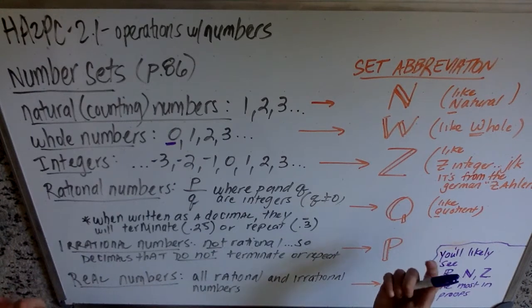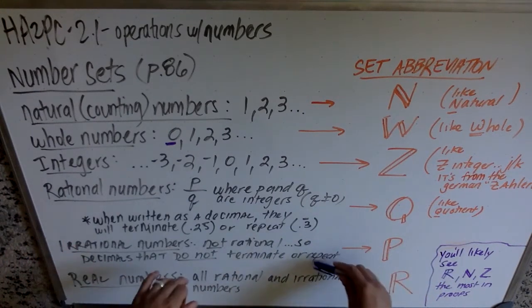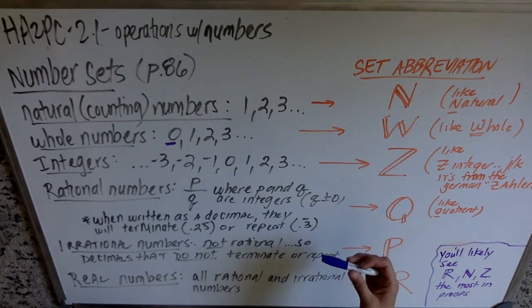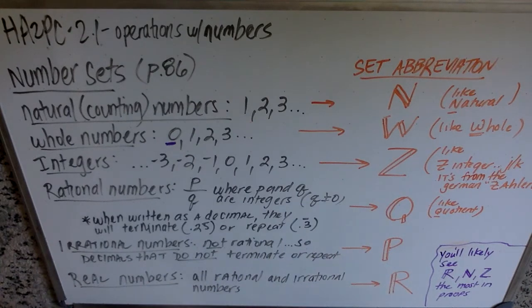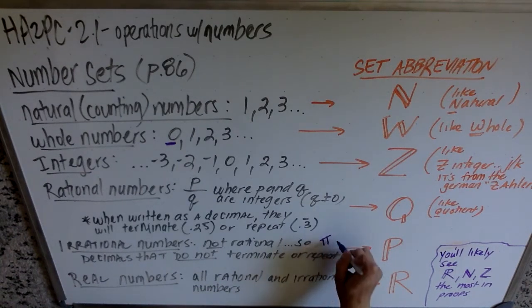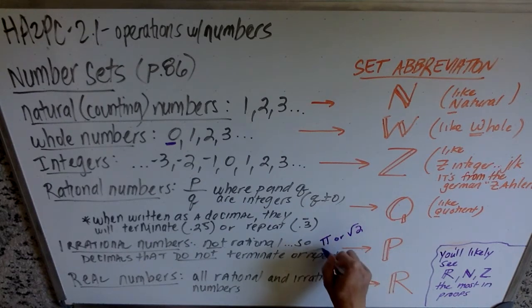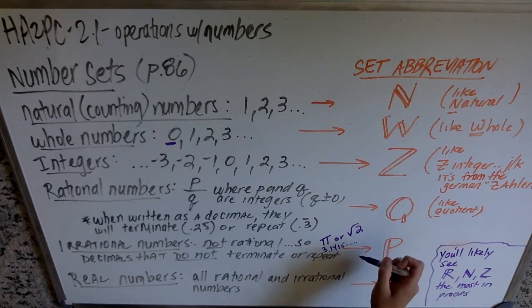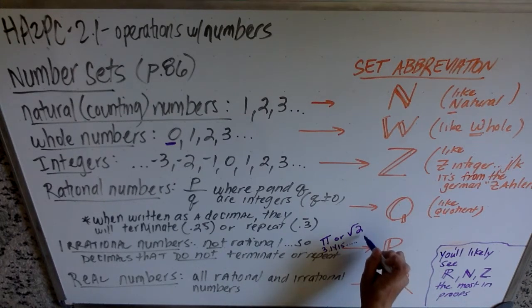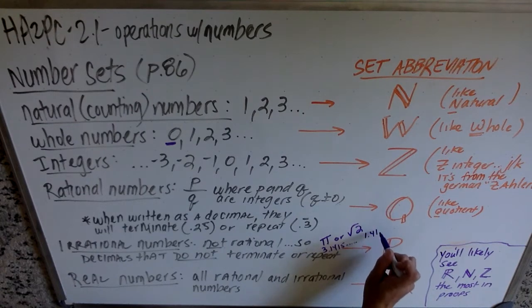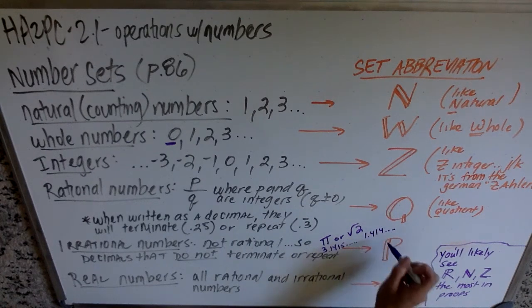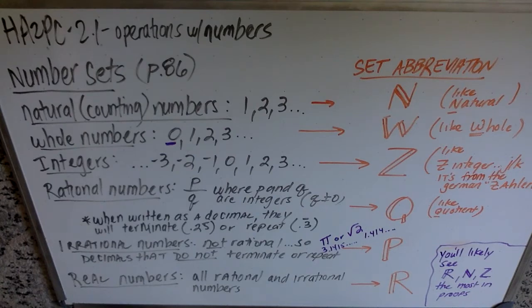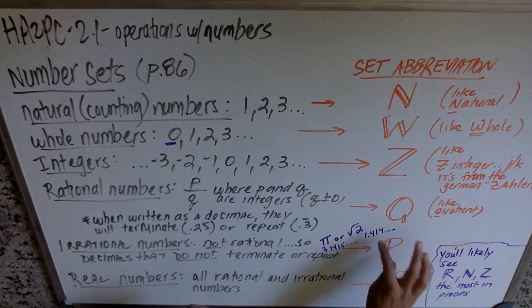Irrational numbers are essentially just not rational. The 'ir' in front of the word rational means not. Basically, they're numbers that do not fit this quality. What that's going to look like is it's going to be a number that as a decimal does not repeat or terminate. An example of an irrational number would be something like pi or the square root of 2. Pi is 3.14159 and so on. It goes on forever, and it does not repeat.